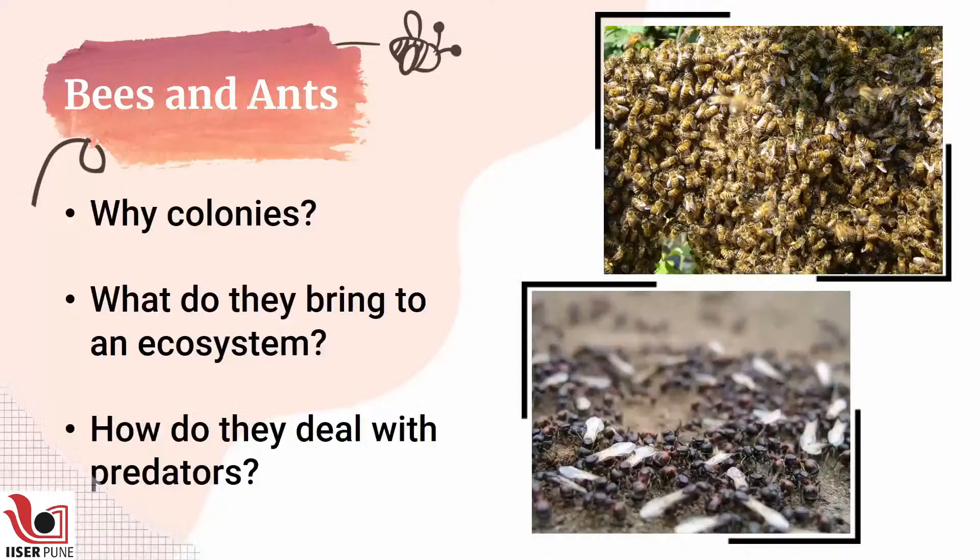Ants are nature's scavengers — they can basically break down anything. If there's a carcass, you will find ants; they can devour a bull carcass very easily. What they do is break down all the organic matter so that even small organisms like bacteria can easily decompose the rest. Without ants, the world would be a lot dirtier than it is right now. They also have very interesting ways of dealing with predators of several sizes.